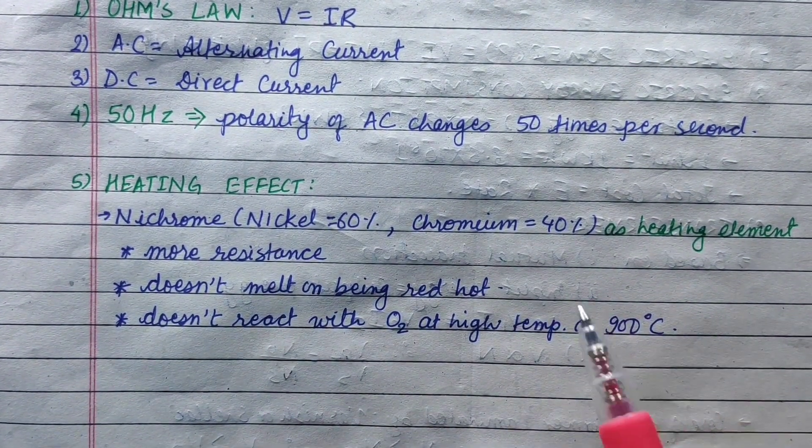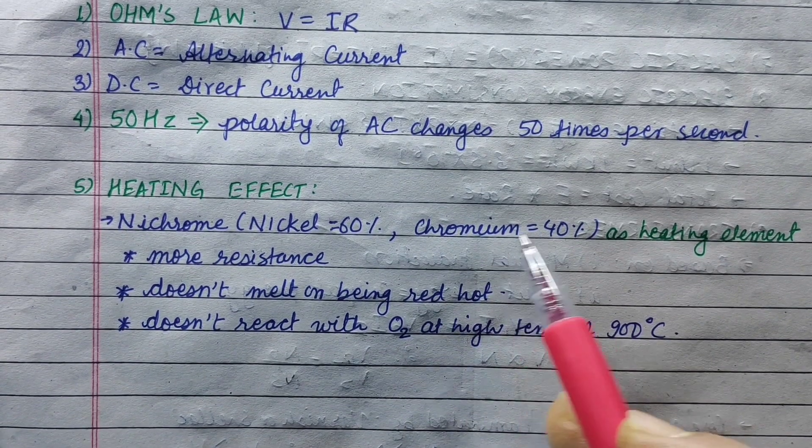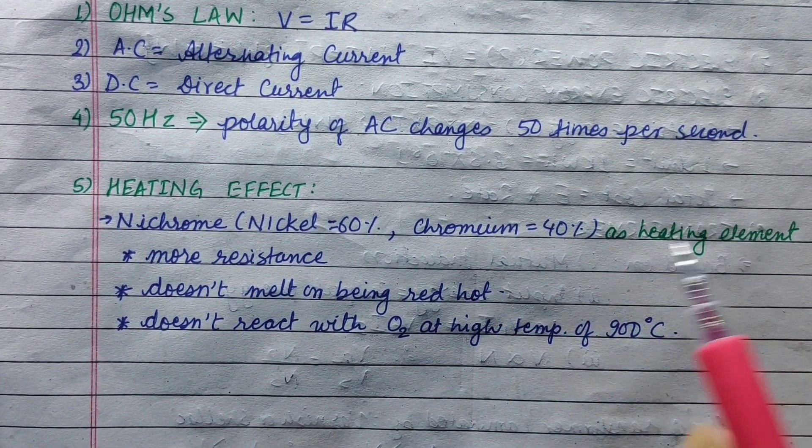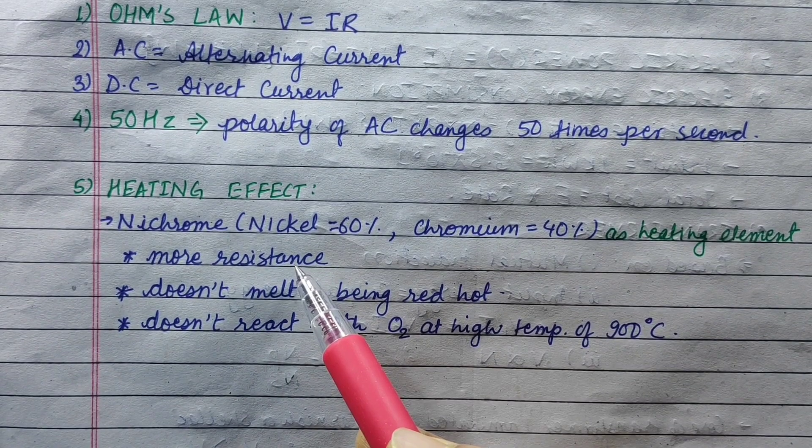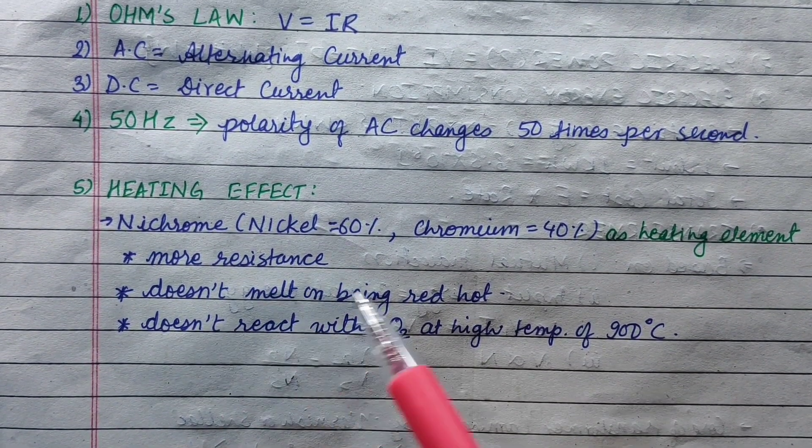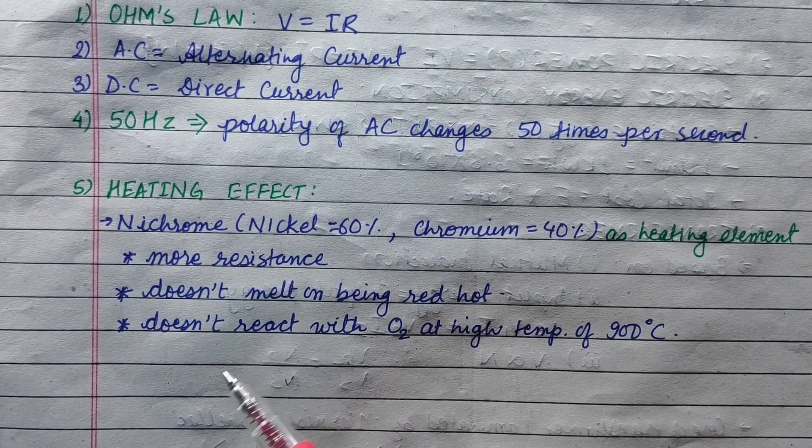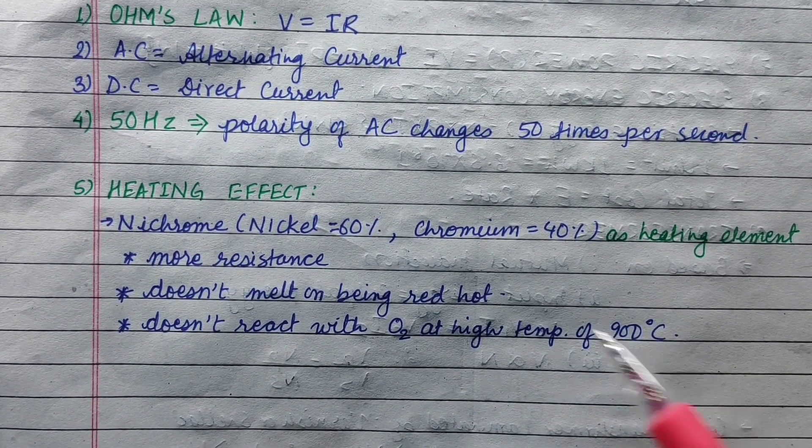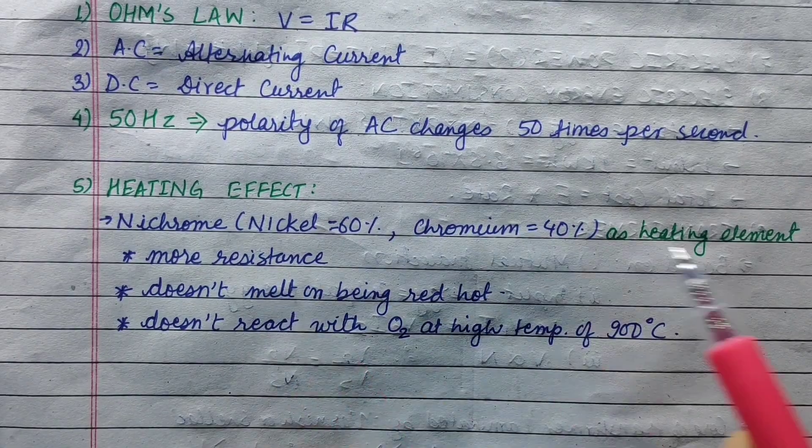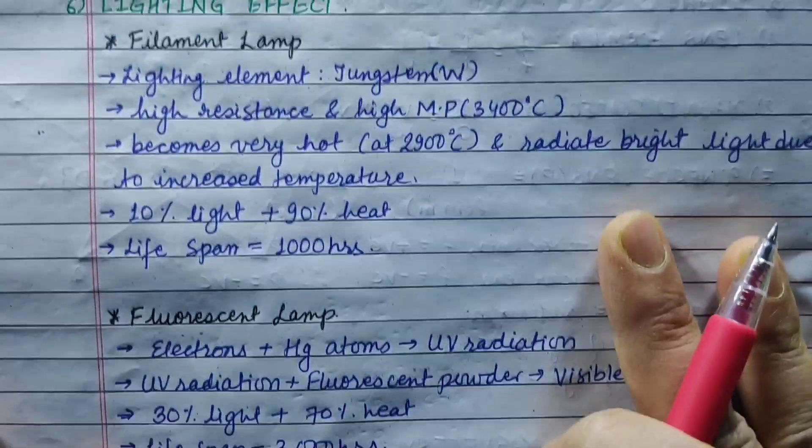For heating effect, nichrome is used. Nichrome is 60% nickel and 40% chromium. It is used as a heating element because it has high resistance, it doesn't melt when red hot, and it doesn't react with oxygen at high temperature.